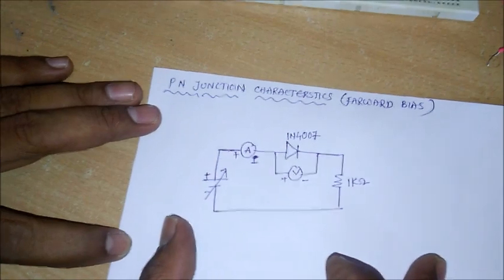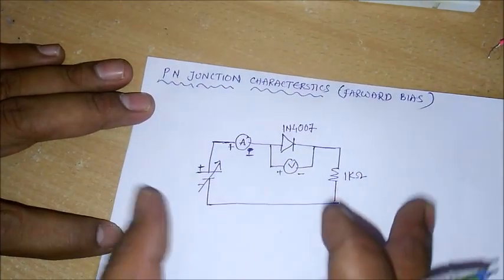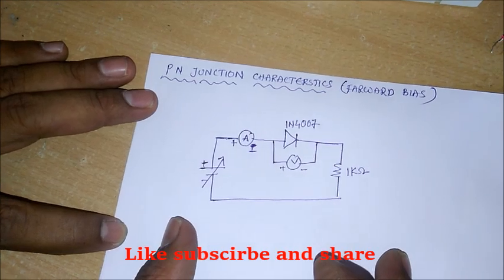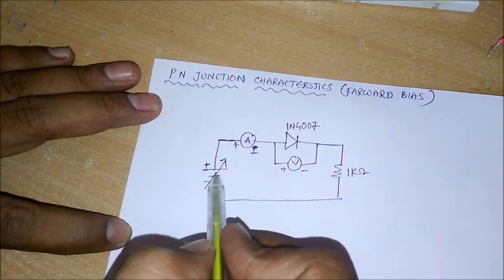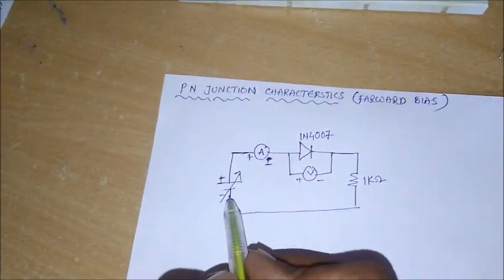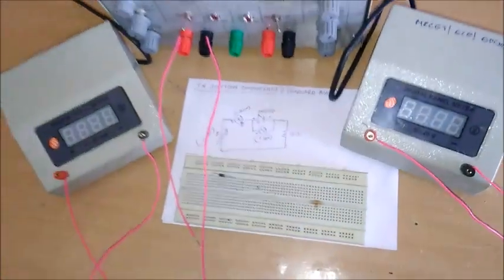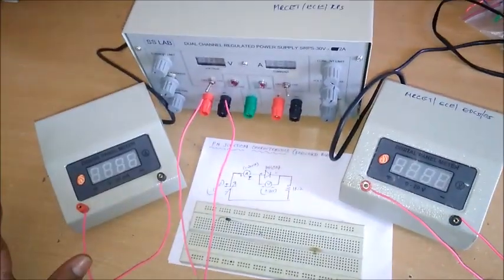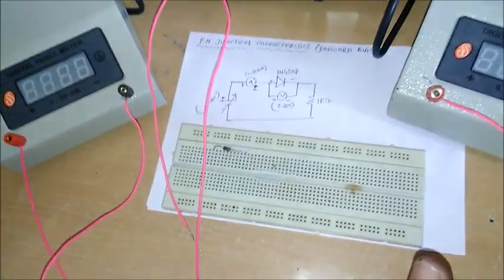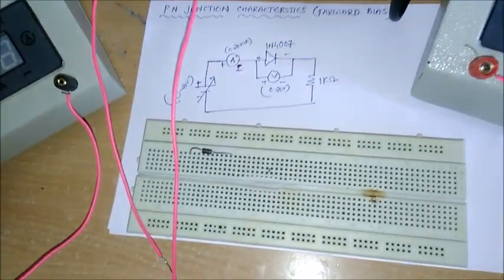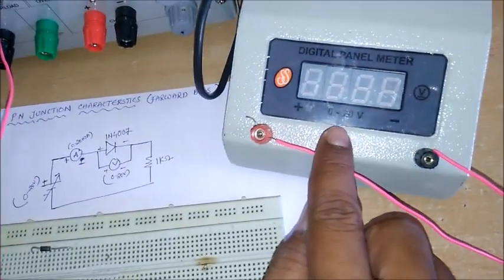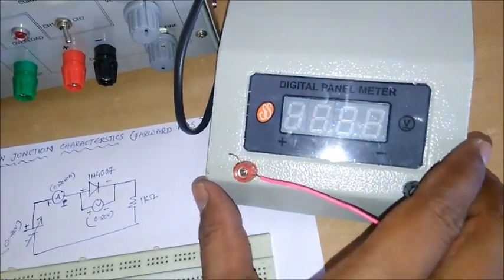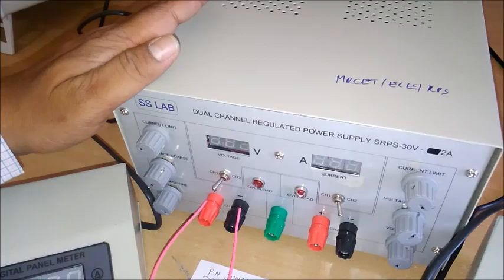This is how the circuit looks in the forward bias condition. We will implement the same circuit on a breadboard and observe how current and voltage vary when we vary the voltage source. For the practical implementation, I am using a digital panel meter of 0 to 20 milliamps ammeter, a 0 to 20 volts voltmeter connected in parallel to the diode, and a dual channel regulator power supply for variable voltage input.